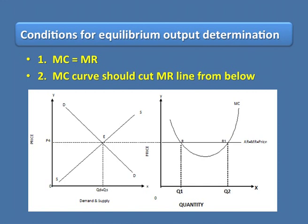The second condition is that the marginal cost curve should cut the MR line from below. At the point of equilibrium output, marginal cost must be increasing and greater than marginal revenue. As long as marginal cost decreases, business firms never attain equilibrium — they try to produce larger and larger volumes. The marginal cost curve is U-shaped: as output increases, MC decreases to a minimum, then rises beyond a certain point. Equilibrium is attained when the rising MC curve cuts the MR line from below.